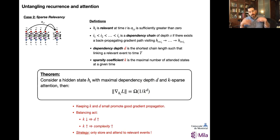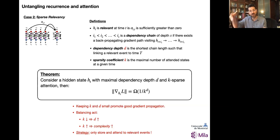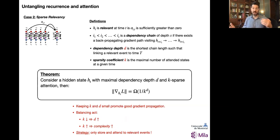The main lessons from this theorem are: both keeping K and D small promote good gradient propagation. The bigger they become, the more this scaling goes down. There's also a balancing act, because K and D are related. The smaller I make K — that's the number of things I can attend to at any given point — the more I promote longer dependency chains, since I can't make a shortcut directly to a past state. But if I make K too large, I increase the complexity of my system. There's a trade-off between these things. The important lesson is that a good strategy is to only store and attend to relevant events.